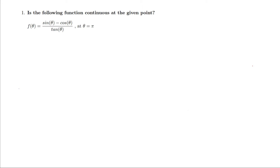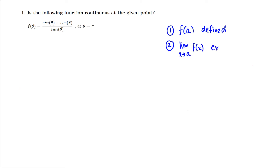Remember, there are three things we have to check to see if a function is continuous at a point. One, f of a must be defined — that point has to exist. Two, the limit as x approaches a of f of x must exist. And three, f of a has to equal the limit as x approaches a of f of x. To confirm continuity, we need to check all three steps.